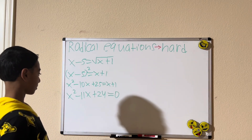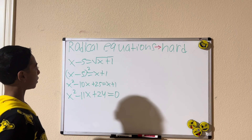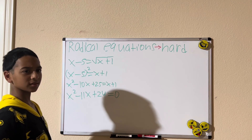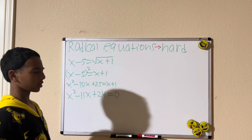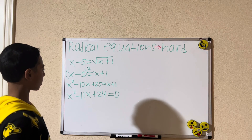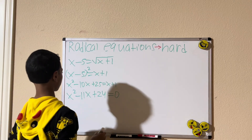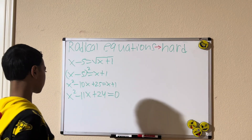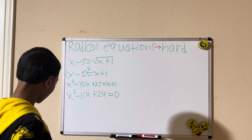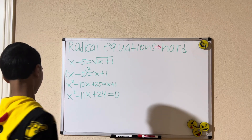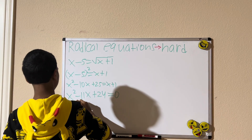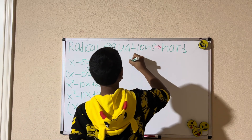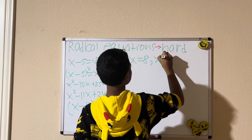Now let's solve this. We need two numbers that multiply to give us 24 but add to give us negative 11. Let's think: 12 and 2 does not work; 8 and 3, yes — but we need negative 8 and negative 3. So we factor as x minus 8 times x minus 3 equals zero, giving us x equals 8 and x equals 3.